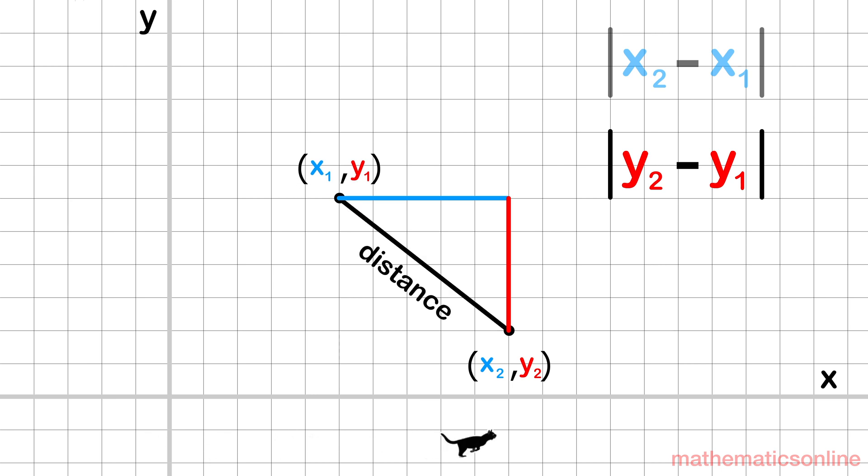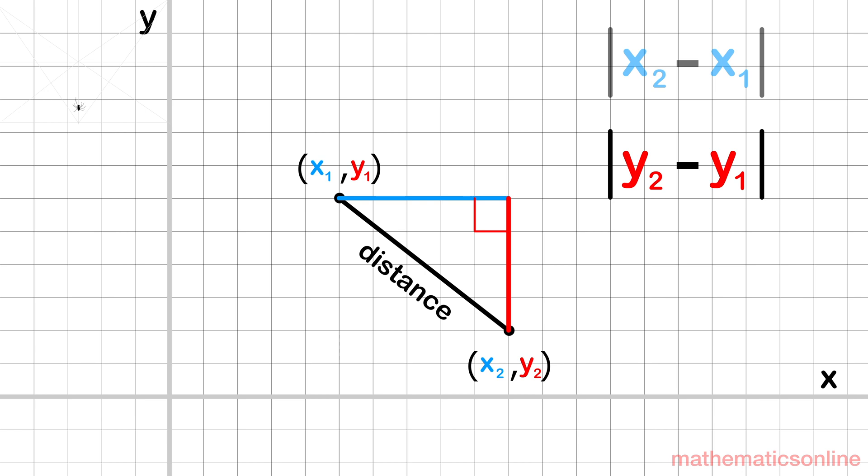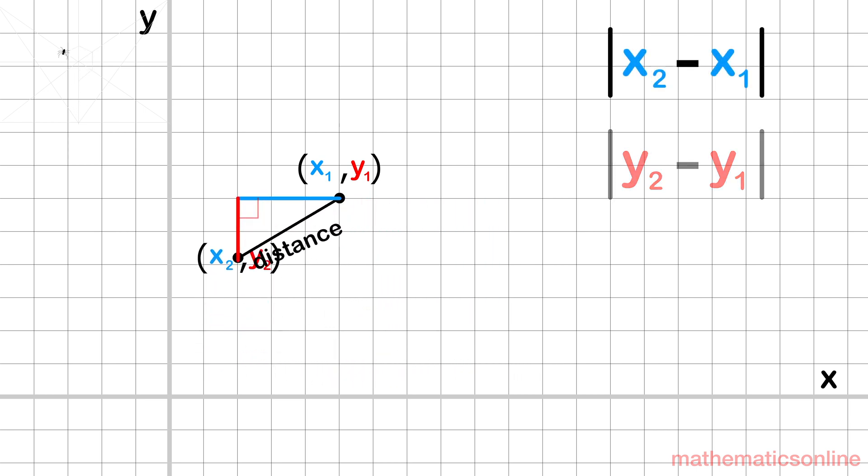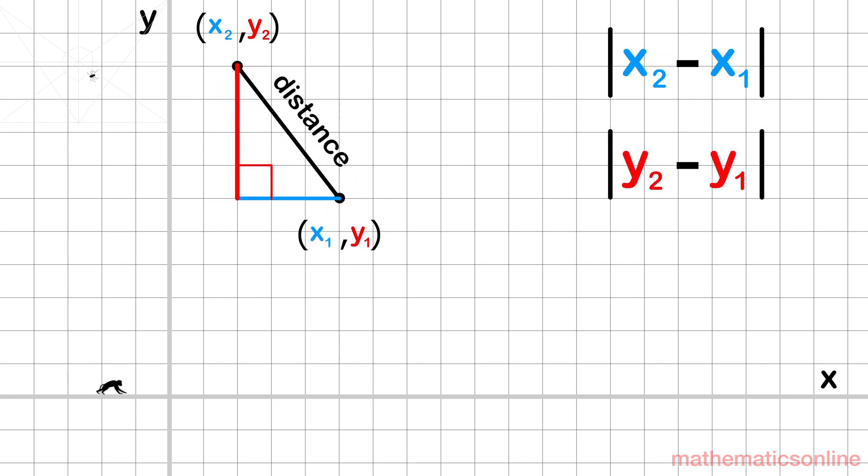The distance is the straight line between the two points. As we move the points around, we may just need to find the vertical distance, or just the horizontal distance, but most of the time we have formed a right triangle.